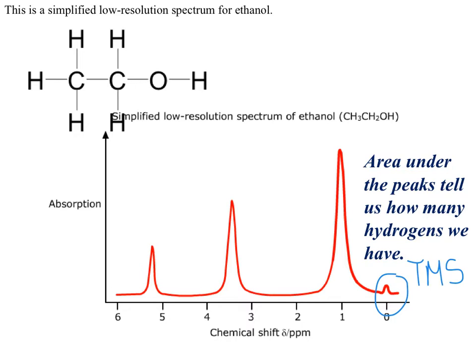We can assign the peaks to the hydrogens that have caused them. This peak at a chemical shift of just over 5 ppm has been caused by the hydrogen atom bonded to oxygen. The reason I can say that straight away is because this hydrogen atom is directly bonded to a very electronegative oxygen atom. The greater the electronegativity of the atom that the hydrogen is attached to, the greater the chemical shift of the peak. This oxygen atom has deshielded the hydrogen atom and hence shifted the peak caused by this hydrogen atom downfield — downfield from the peak caused by the standard at 0.